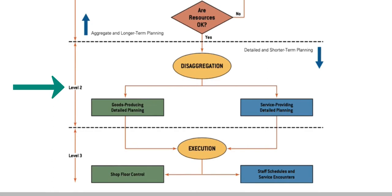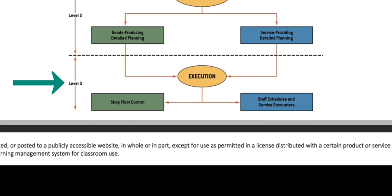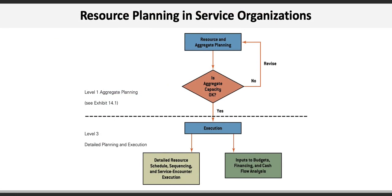Here's a slightly modified resource planning framework specific to service organizations, where service firms frequently take their aggregate plans and disaggregate them down to the execution level as detailed front-line staff and resource schedules, job sequences, and service counter execution. Here, we're essentially combining disaggregation and execution into one level.